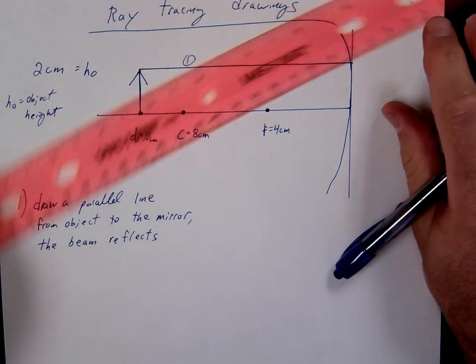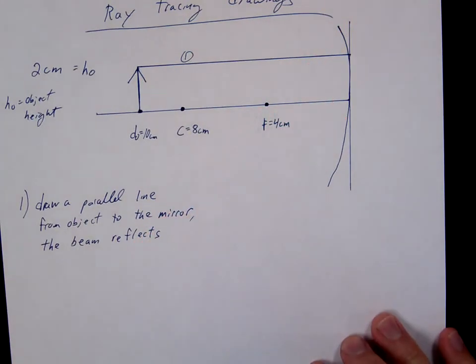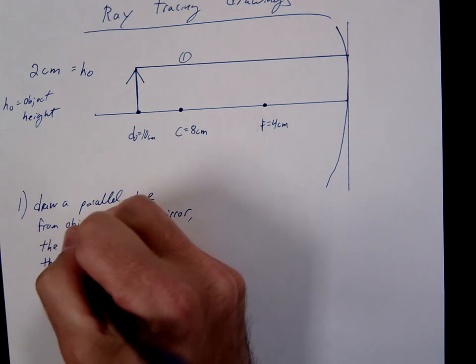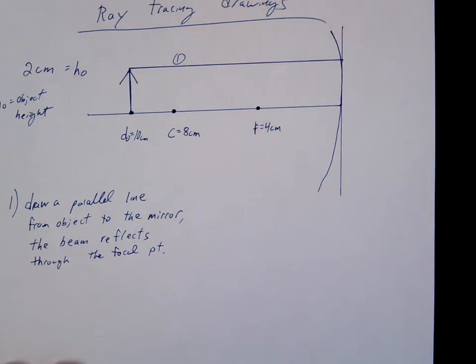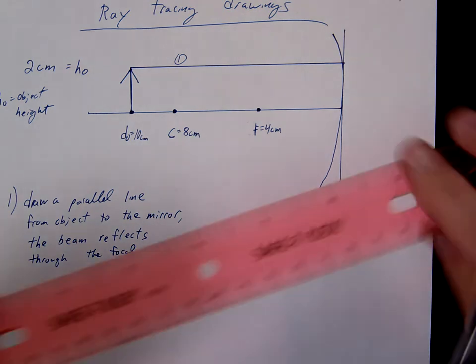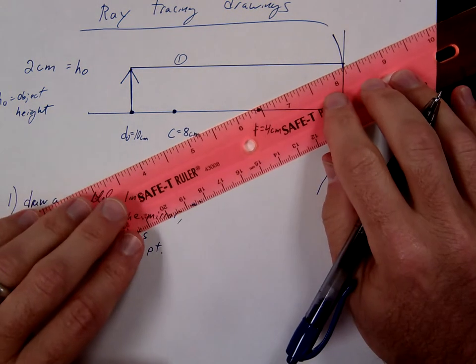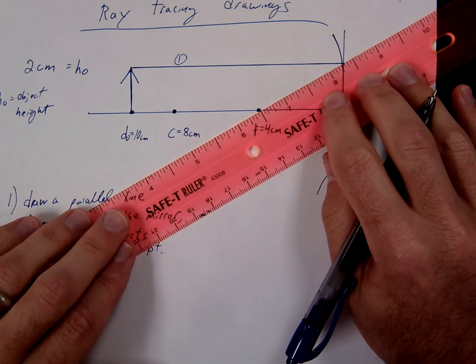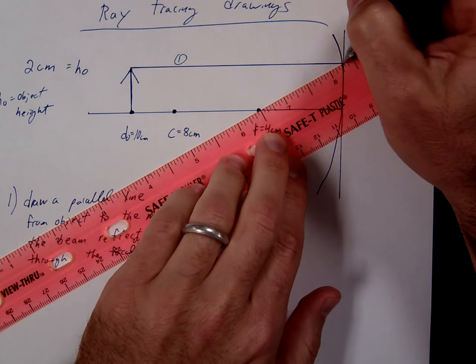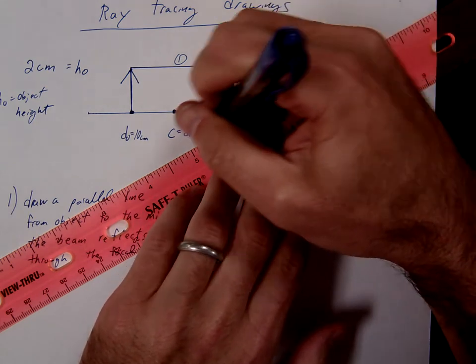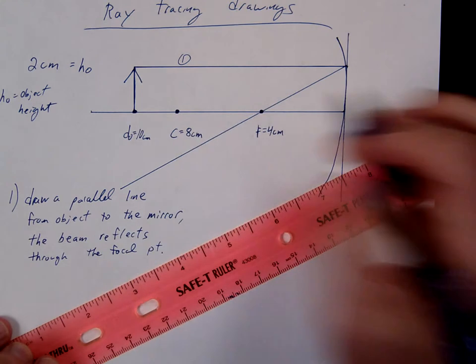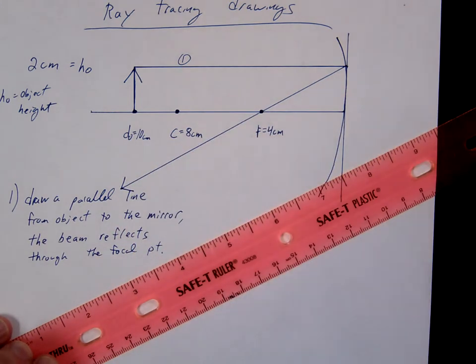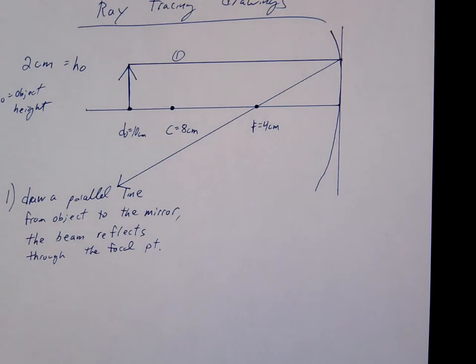Then that beam is going to reflect. If you remember our previous visual, how do parallel beams reflect off of mirrors? Through the focal point. So what you're going to do is take your ruler. The beam reflects through the focal point. So what you're going to do is take your ruler. And again, we're going back to that vertical. I'm just going to go ahead and reflect it right through the focal point. So that's the first beam.